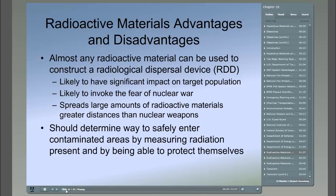Almost all radioactive material can be used to construct a radiological dispersal device, an RDD, such as a fission product, spent fuel from nuclear reactors, and medical, industrial, and research waste. For the greatest damaging effect, the most radioactive fissile material would be used as the active ingredient of the RDD. An RDD would likely have a significant impact on the target population. An uninformed society may contribute to the terrorist objectives because they are more likely to initiate widespread panic and disperse away from the target area. Unless the public has a basic understanding of nuclear, biological, and chemical terrorism, any use of an RDD is likely to invoke fear of nuclear war.